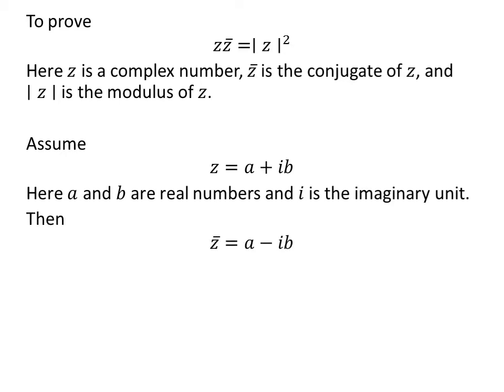So, the conjugate of z is equal to a minus i times b. And the modulus of z is equal to the square root of the square of a plus the square of b.